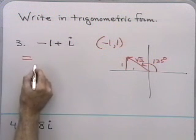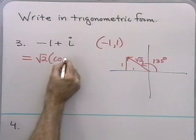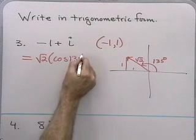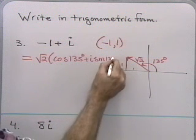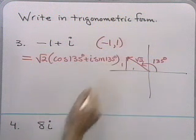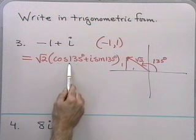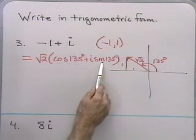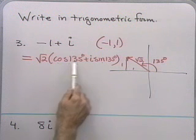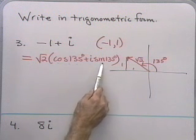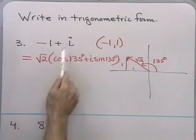In trigonometric form, this must be √2 · (cos135° + i·sin135°). Would that make sense? cos135° = −1/√2 and sin135° = +1/√2. When I multiply by √2, I get −1 + i. This is 135 degrees from the positive x-axis, and if the legs are each 1 unit, the vector length is √2.